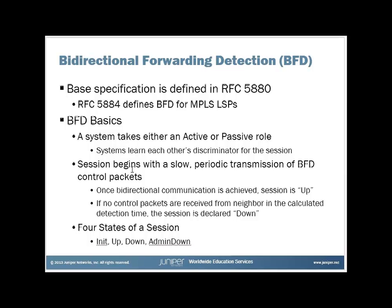Each session begins with a slow periodic transmission of BFD control packets. Once bidirectional communication is achieved, the session is determined to be up by both sides. If no control packets are received from a neighbor within a calculated detection time, the session is declared down. This gets down to the millisecond level, so it is possible to detect a neighbor going down in the millisecond range.